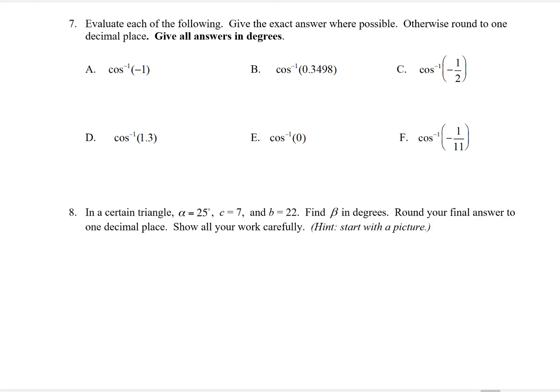Problem number seven. We want to evaluate each expression here. If possible, we want to do so by hand and give the exact answer. Now the only way I could do that is if I see one of our nice ratios. For example, in part A, negative one makes me think, well I should be able to just go to the unit circle